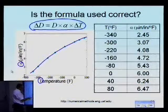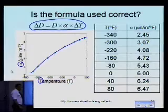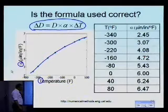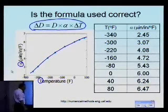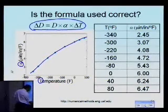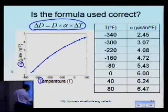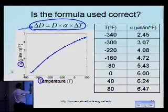In fact, as you decrease temperature, alpha decreases. So that means that at lower temperatures the amount of contraction should be lower per unit temperature change, as opposed to at high values. That means we may have overestimated the value delta D by using this particular formula here.